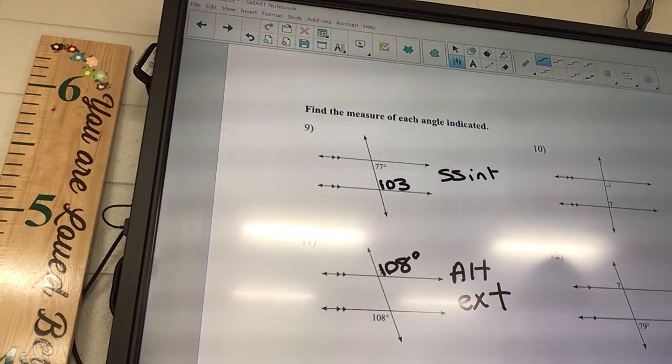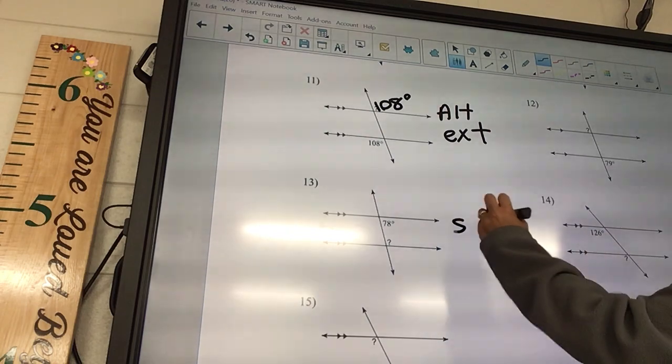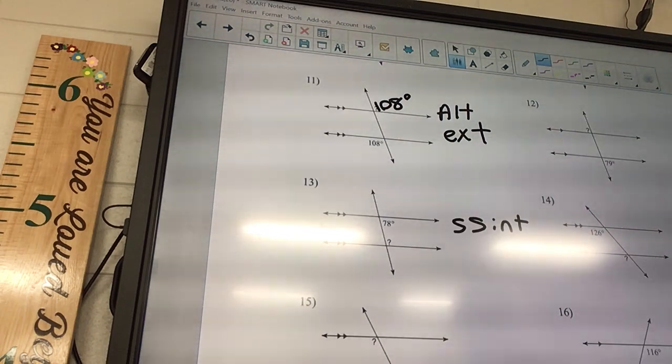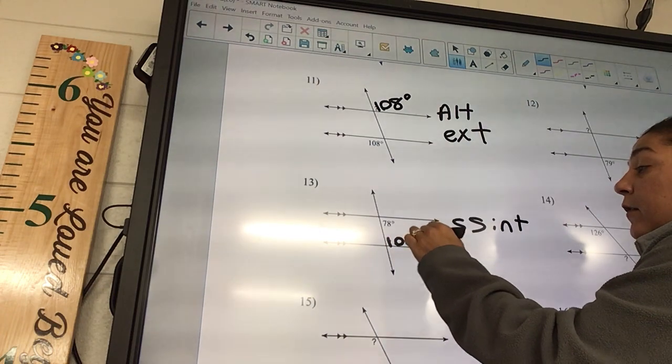Number 13, where's the question mark? Inside. Where's the 78? Inside. Are they same sides or opposite sides? Same side, so they're same side interior. Are they going to be equal or add up to be 180? Same sides add up to be 180, so you're going to say 180 minus 78. 102, so 102 degrees.